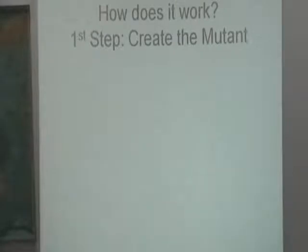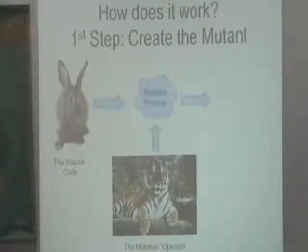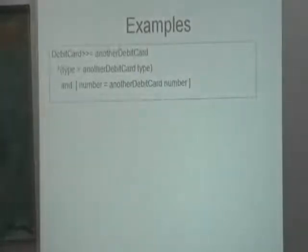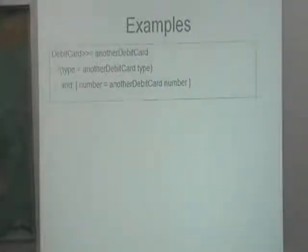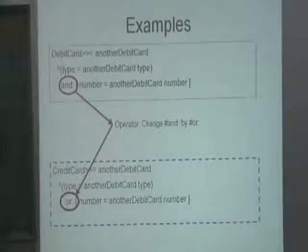How does it work? The first step is creating a mutant. You take the source code, apply a mutant operator, and after a mutation process you create the mutant. For example, let's say we have code where a debit card equals another debit card — you check if they are equal. A mutation operator would change the AND to an OR, for example, and that new code is a mutant.